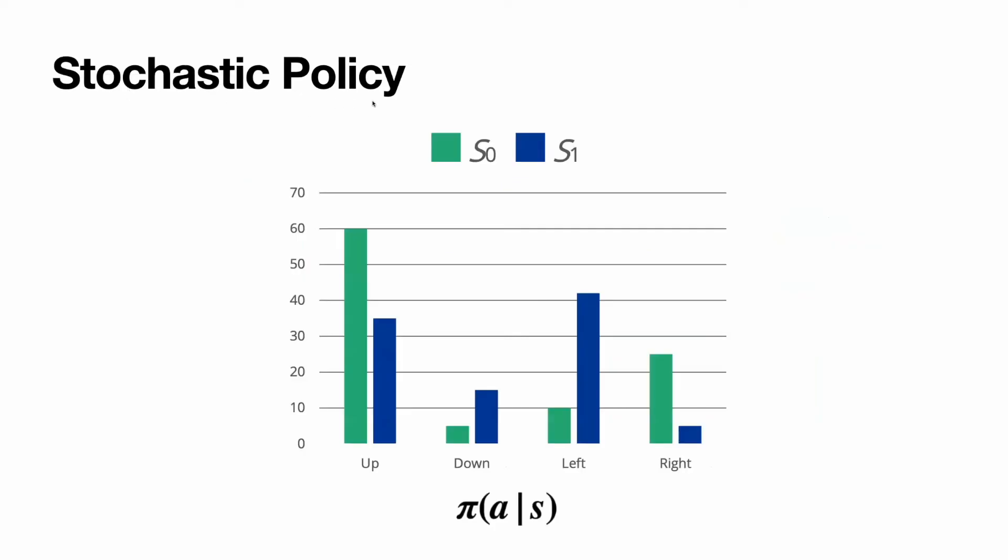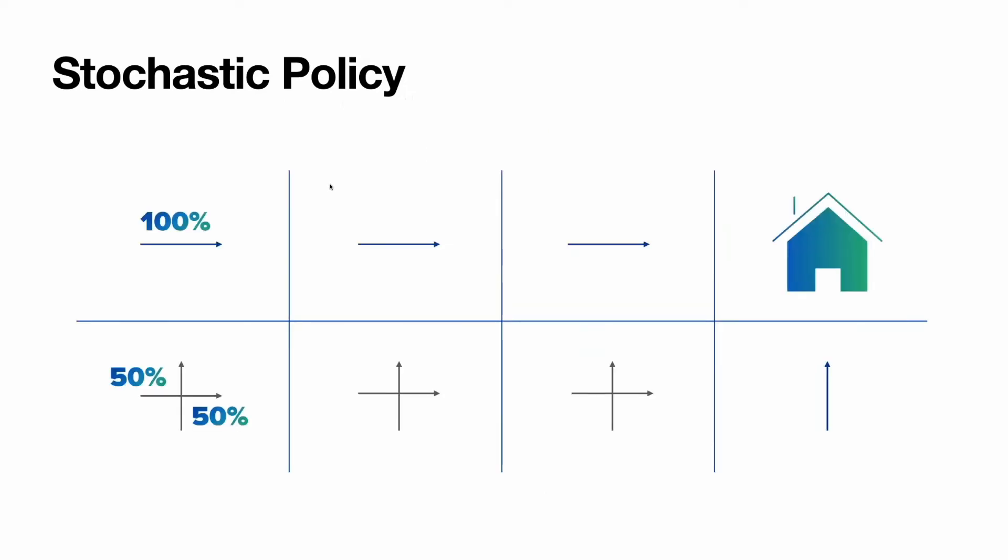For stochastic policy, for states, we rather receive a distribution of probabilities. And the higher the probability of the action, the more we call it optimal action. If this stochastic policy will converge, again, it's an optimal policy.